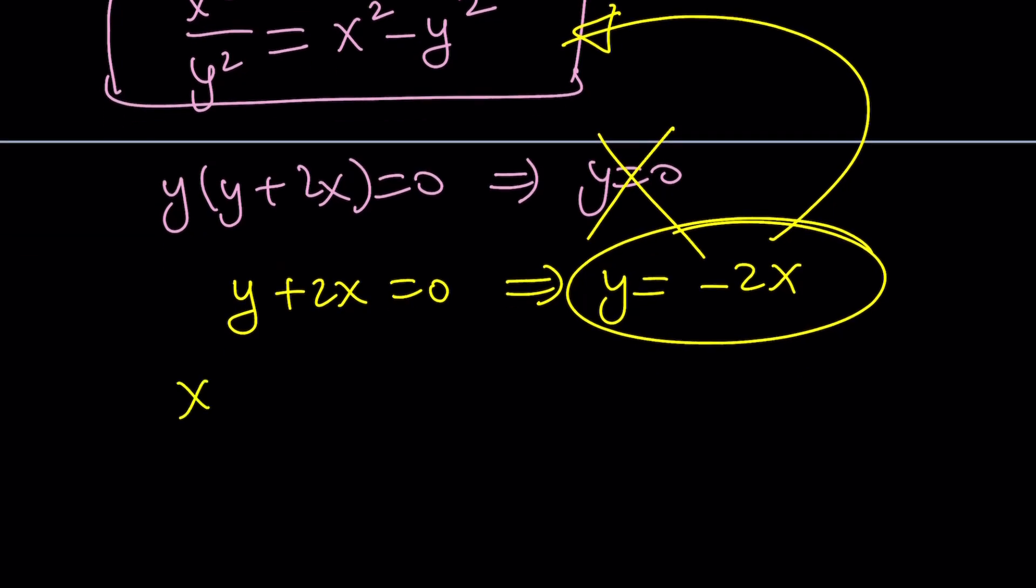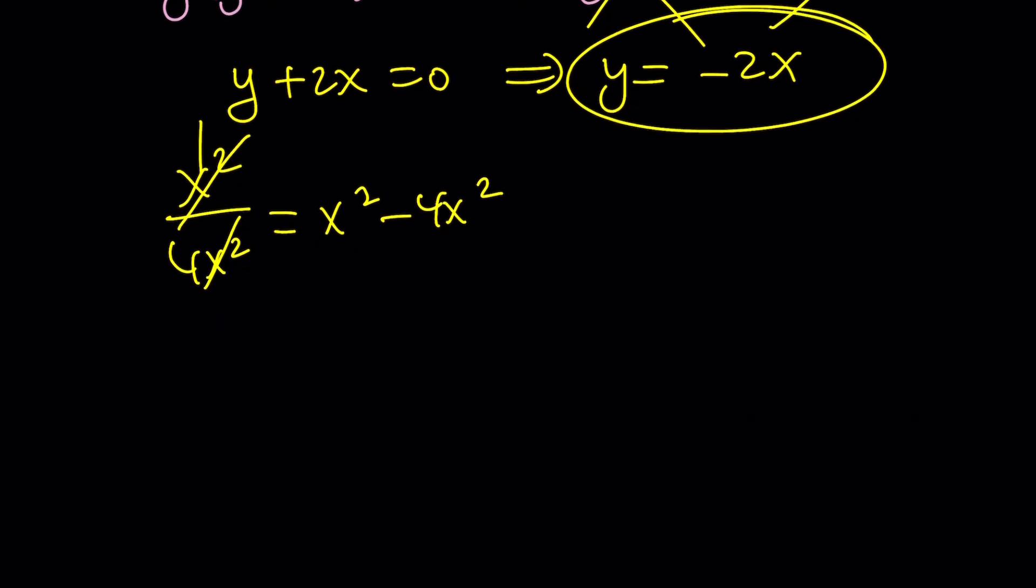You're going to get x squared over 4x squared equals x squared minus 4x squared. This is going to be 1 fourth. And we're going to get negative 3x squared equals 1 fourth, which means x squared equals negative 1 over 12, if you divide both sides by negative 3.